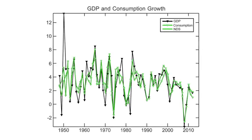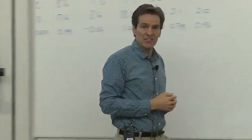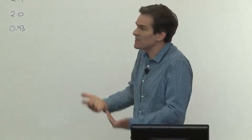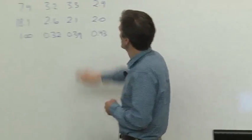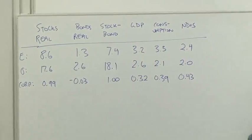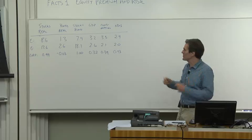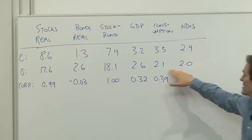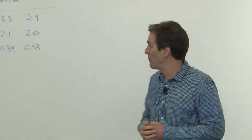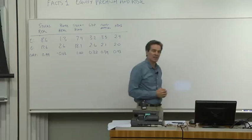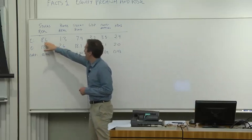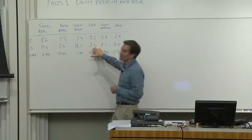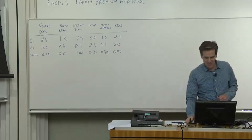GDP and consumption growth: the next graph shows growth rates. GDP and consumption both go up and down — down in recessions, up in booms. GDP and consumption grow about 3% a year in aggregate, more like 1–2% per capita. Notice the volatilities: around 2.6%, 2.1%, 2.0%. So GDP and consumption are much, much more stable than asset pricing. Stocks pay a lot but are very volatile. Why are stocks so volatile compared to the underlying economic fundamentals? That's a big puzzle to work on this quarter.